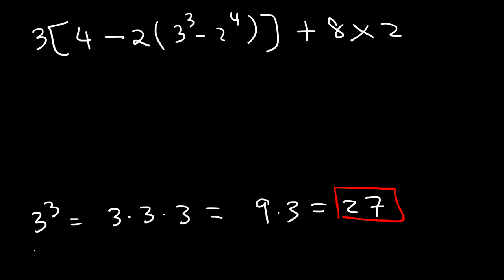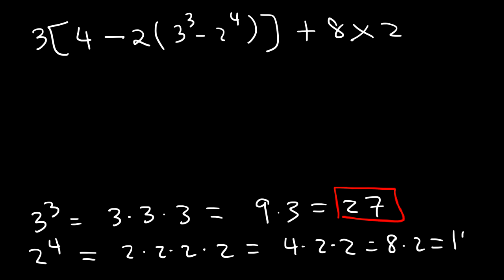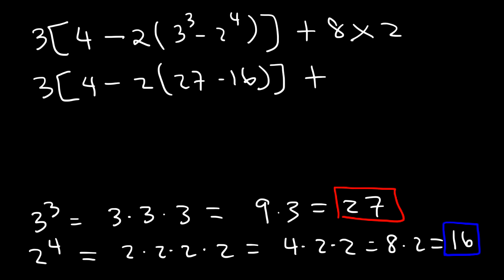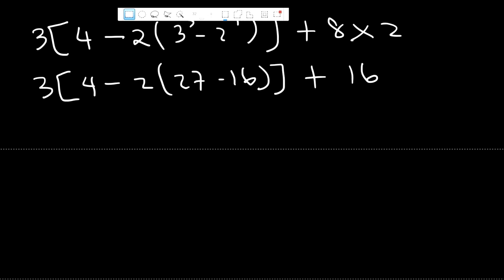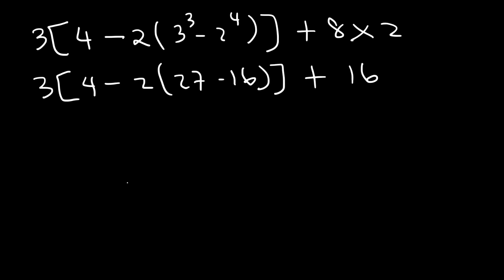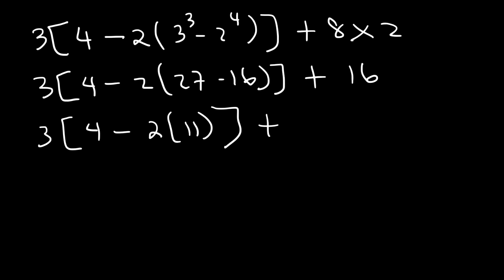What about 2 to the 4th? This means we're multiplying four 2's together. 2 times 2 is 4, 4 times 2 is 8, 8 times 2 is 16. So 2 to the 4th is 16. Now we have 27 minus 16 on the inside, and 8 times 2 equals 16. 27 minus 16 is 11. Next, we have 11 times 2, which is 22.